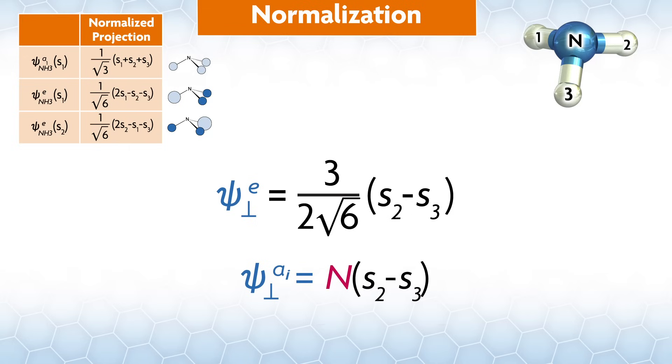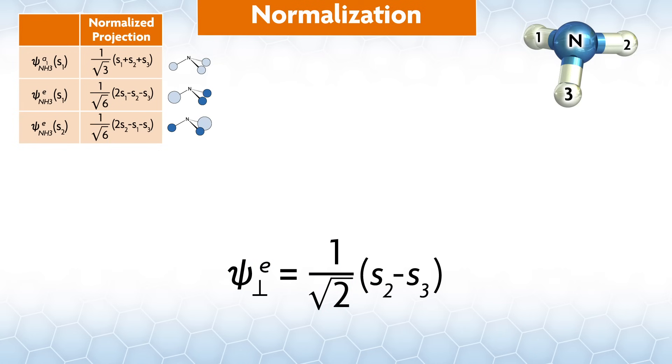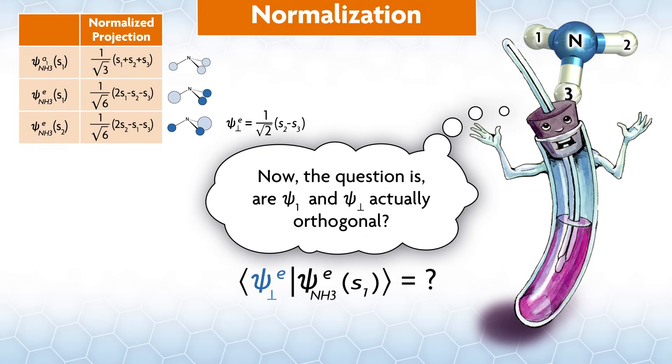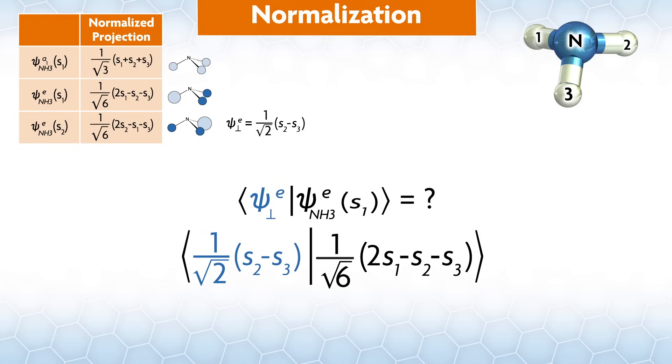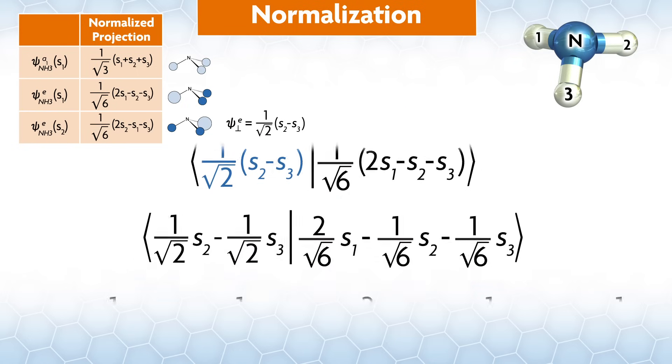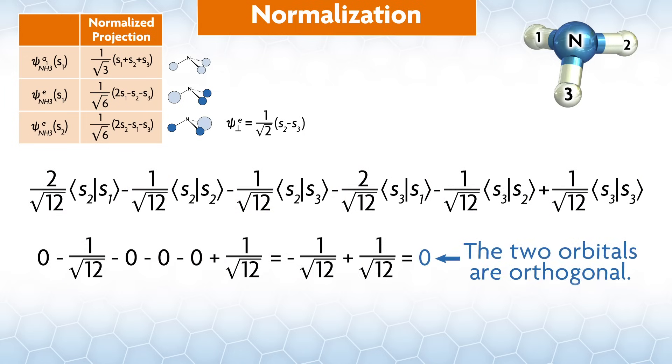So, we get that the orthogonal orbital to psiES1 is just s2 minus s3 with a normalization factor. Now, the question is, are psi1 and psi perpendicular actually orthogonal? Does the overlap integral for the two normalized functions equal zero? So, again, we check that, and it looks like this. Let's distribute the normalization constants. Then we can break these into smaller integrals. Here again, the overlap of an orbital with itself is one, and the overlap of an orbital with another orbital is zero. So, this simplifies to this, which is equal to zero. So, the two orbitals are orthogonal.